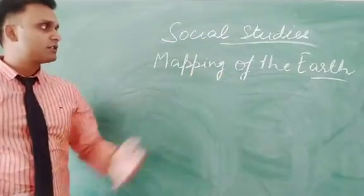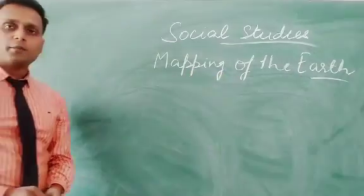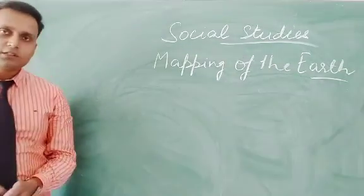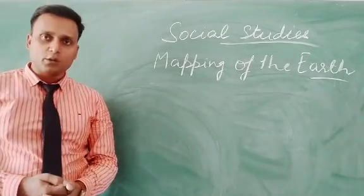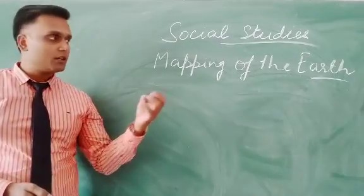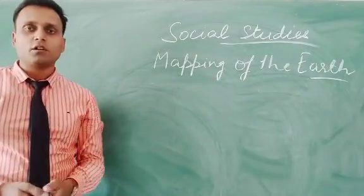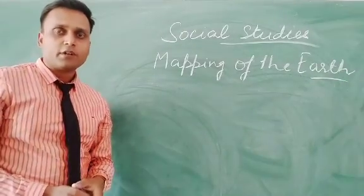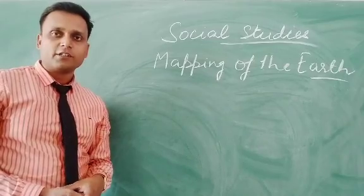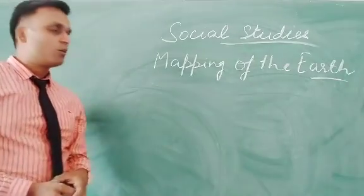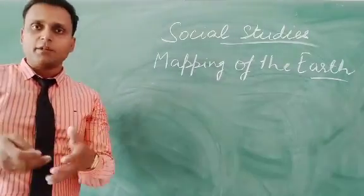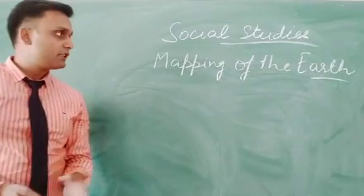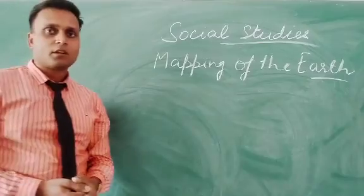In Mapping of the Earth, we are able to find the exact location of a place, what is the direction of the place, in which direction the exact location of a place lies on the Earth. We are going to learn how it is possible with the help of some elements of mapping in this chapter.